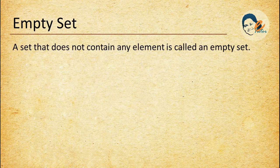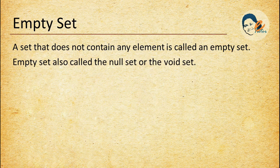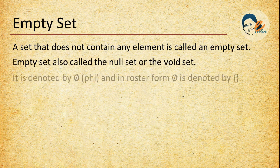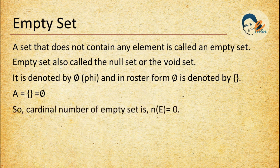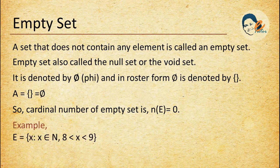Let's start with empty set. A set that doesn't contain any element is called an empty set. Empty set is also called the null set or the void set. It is denoted by Phi, and in roster form Phi is denoted by empty brackets. So if A is a set, then A equals empty brackets equals Phi. The cardinal number of empty set is n(E) equals zero. For example, E = {x such that x belongs to N and 8 < x < 9} is a null set because there is no natural number between 8 and 9.